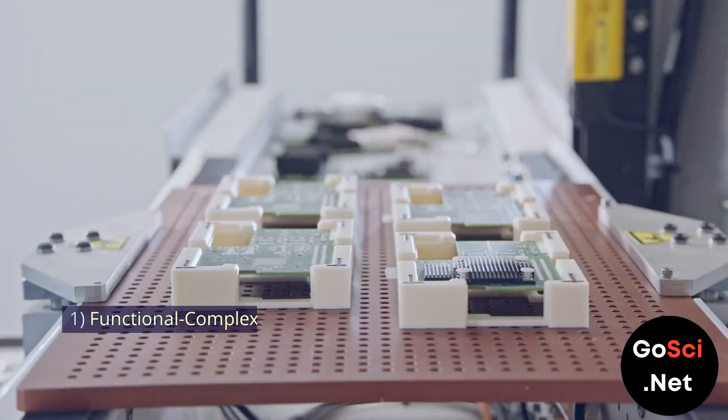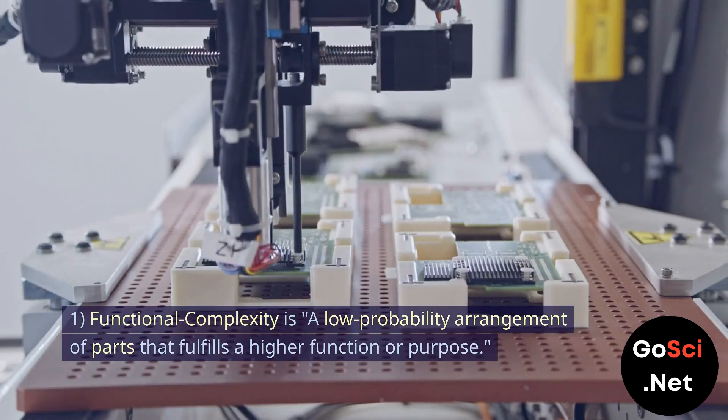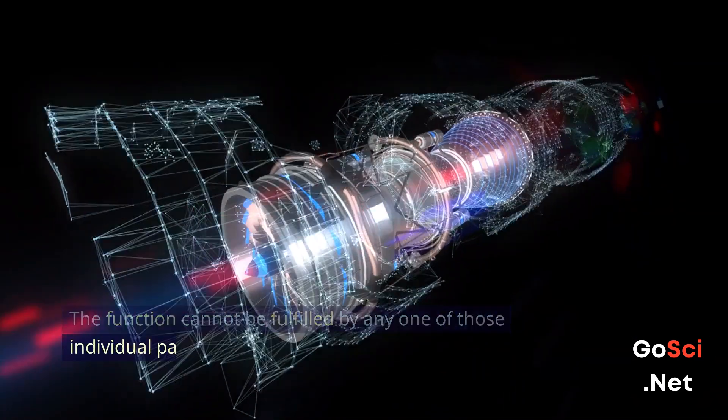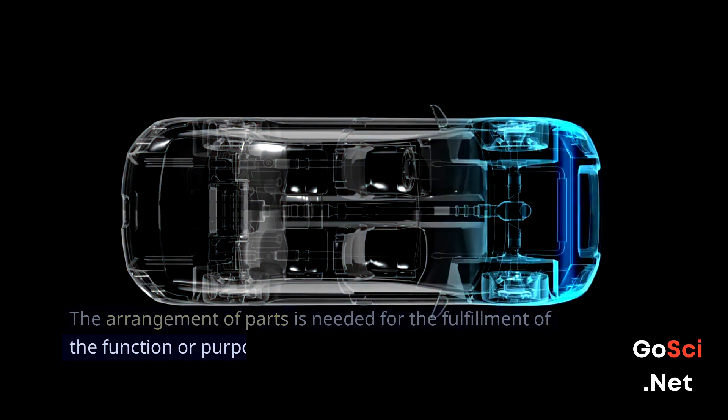Details. First, functional complexity is a low-probability arrangement of parts that fulfills a higher function or purpose. The function cannot be fulfilled by any one of those individual parts. The arrangement of parts is needed for the fulfillment of the function or purpose.